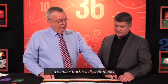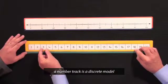So this is what we call a discrete model, and I can point to this chunk and say that's one, that's another one, that's another one, that's another one.